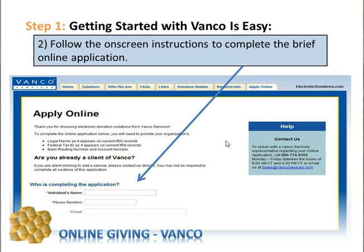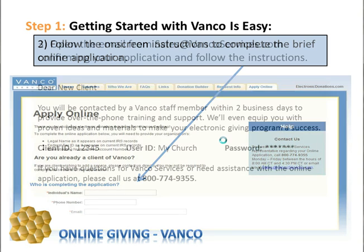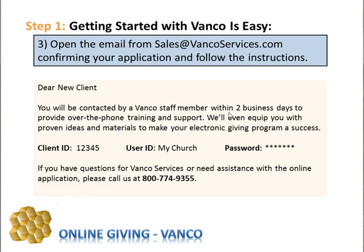Once you complete this, Vanco will email you back letting you know when you have successfully completed the online giving application. It also will call you within two days to establish a good relationship with your church. When you receive that email, it will carry several pieces of important information such as their toll-free support number, but also three pieces of information required in the next step: your client ID, your user ID, and your password.